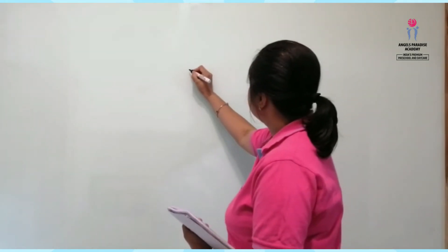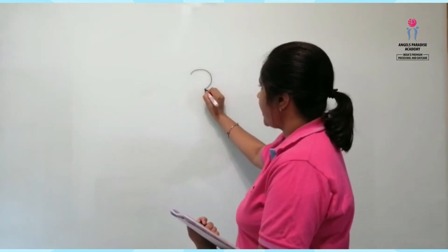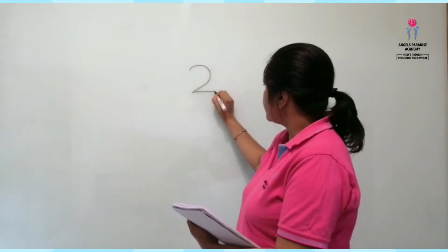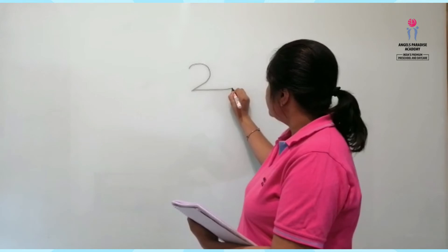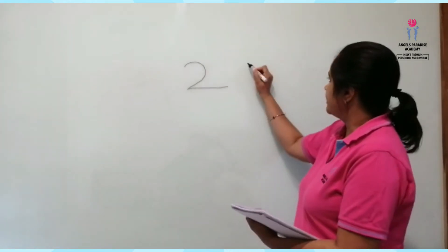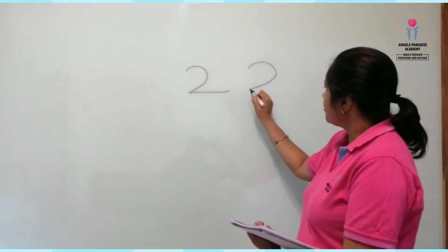Hello everyone, today I'm going to teach you how to write the number two. Let's do it with me: around and back across the railroad track — two, two, two, two, two. Let's try it again: round and back across the railroad track.